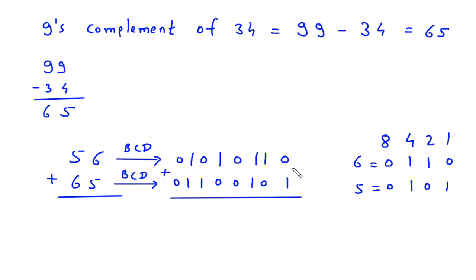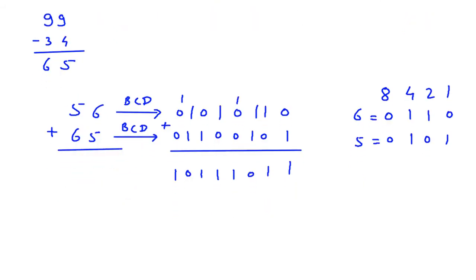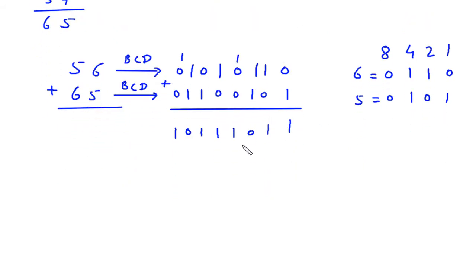Now we have to add these two BCD values. Adding bit by bit: 0 plus 1 is 1, 1 plus 0 is 1, 1 plus 1 is 0 carry 1, and so on. After completing the addition, we group the result into groups of 4 to check whether each group is valid BCD.